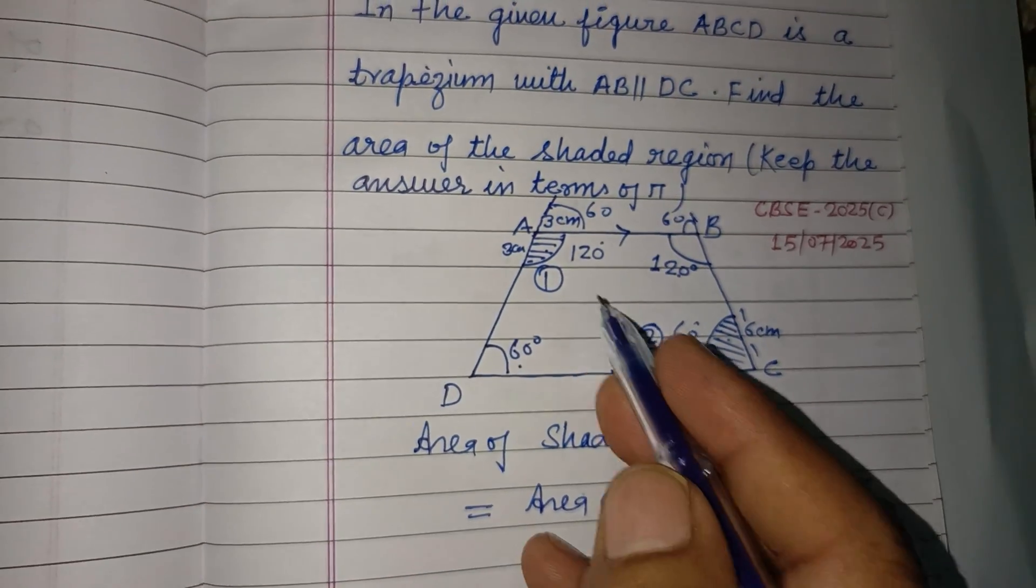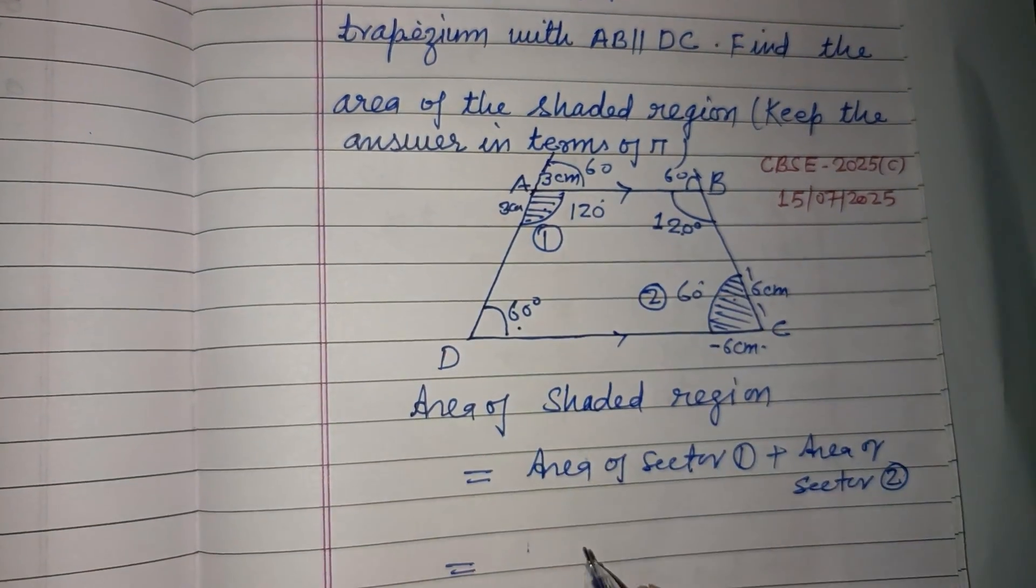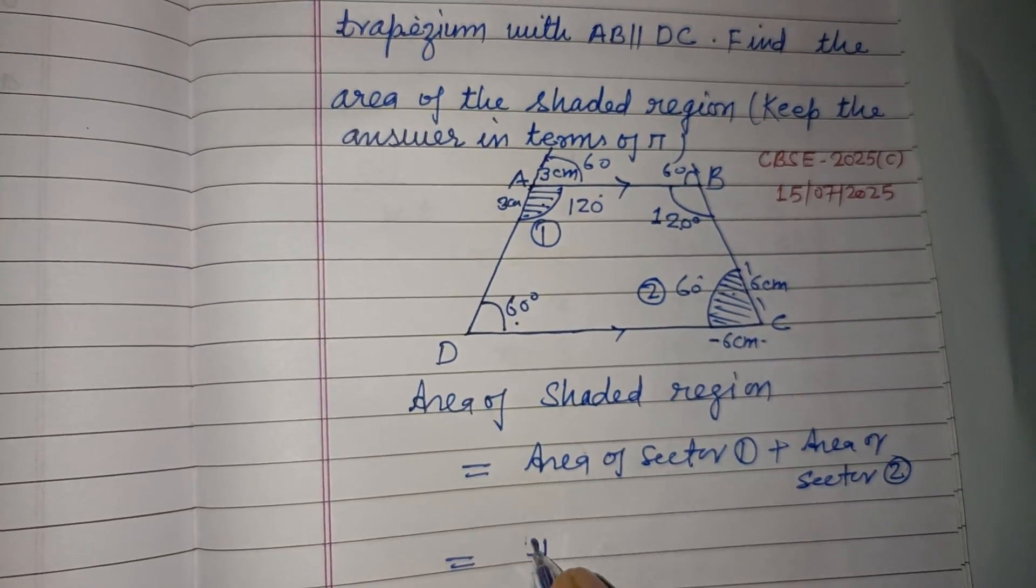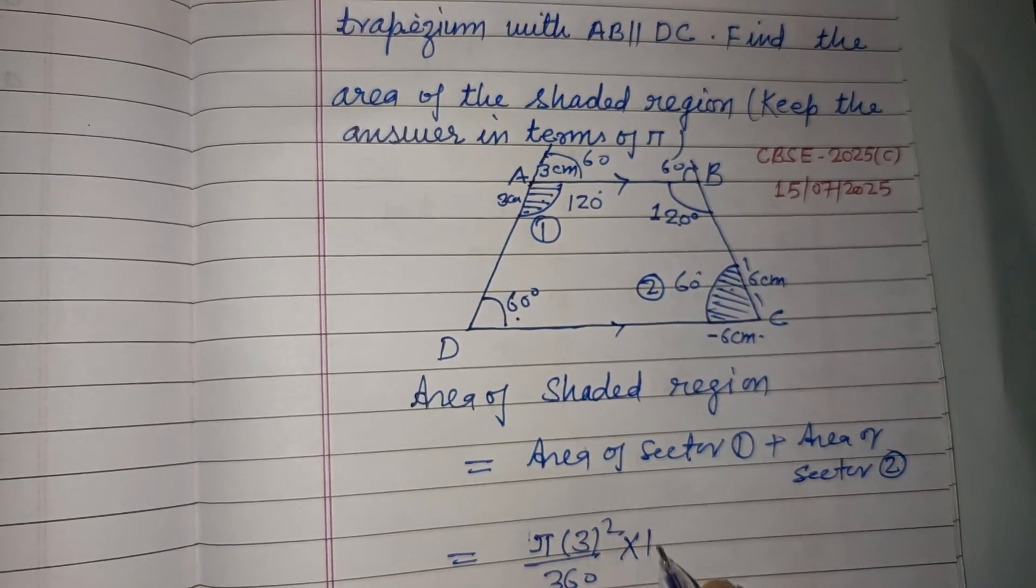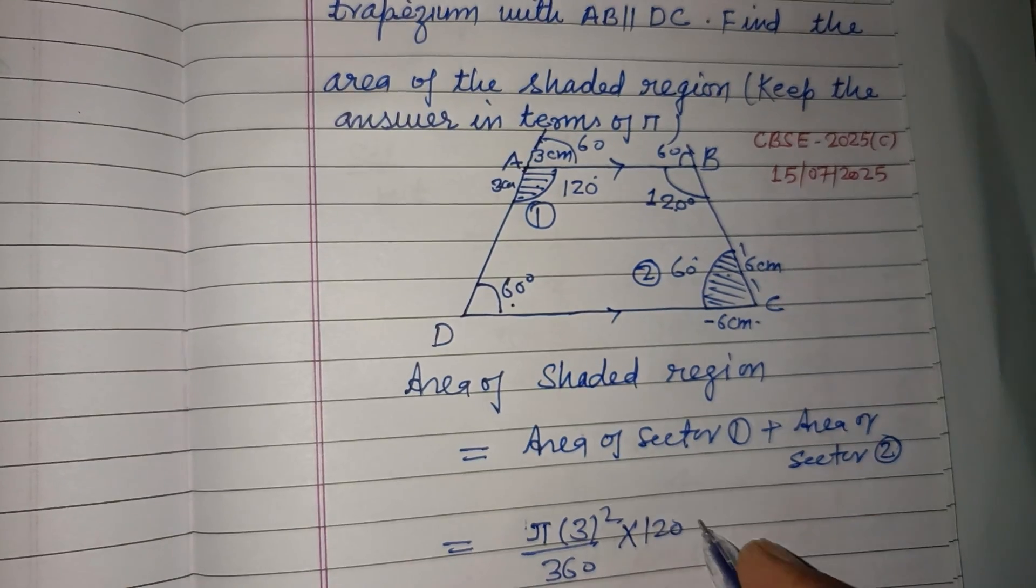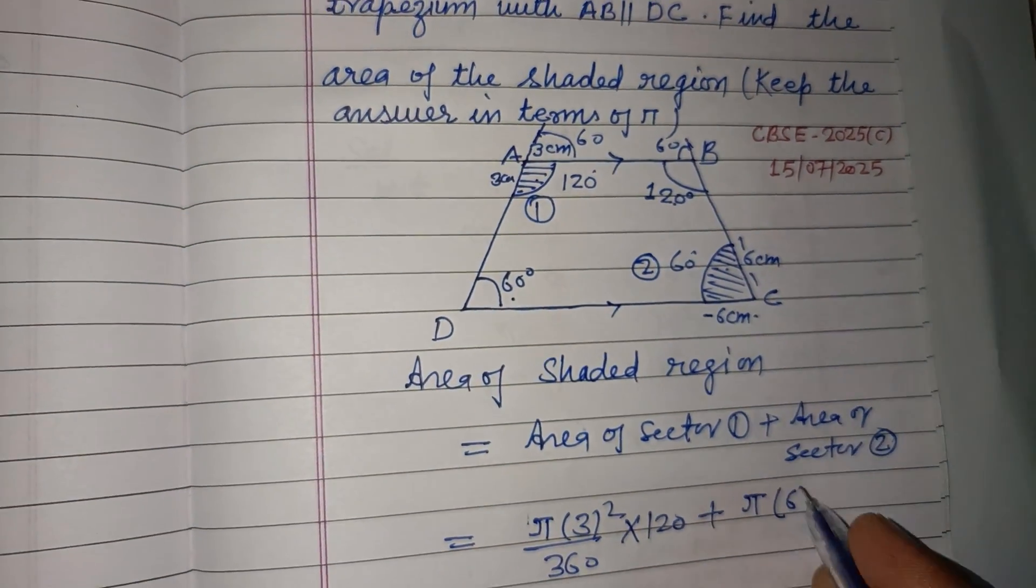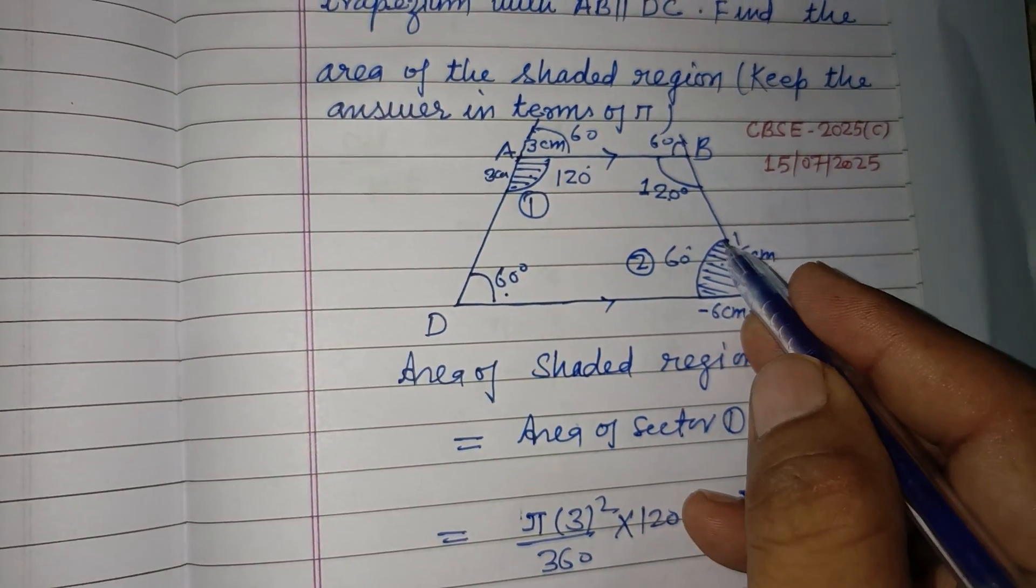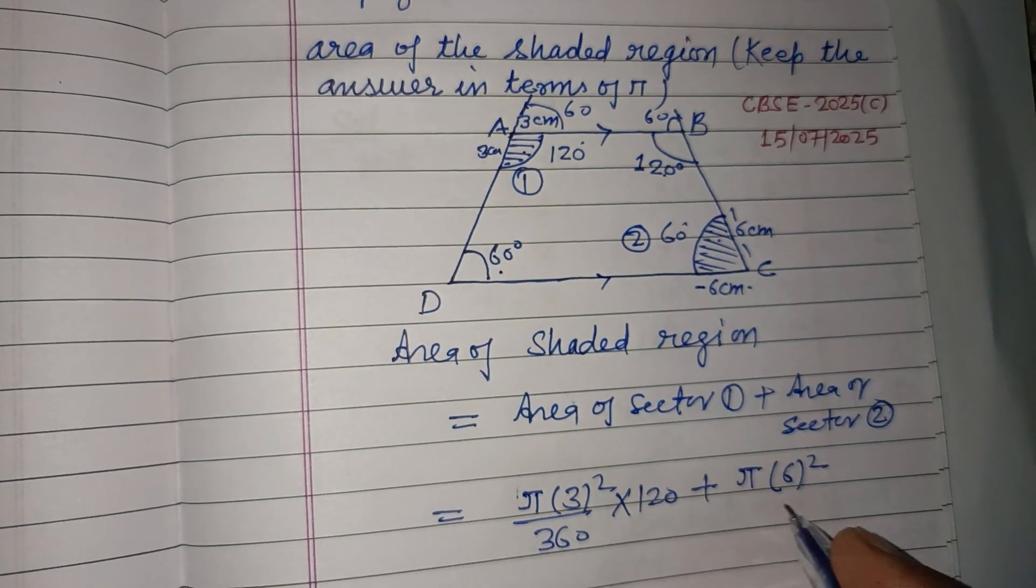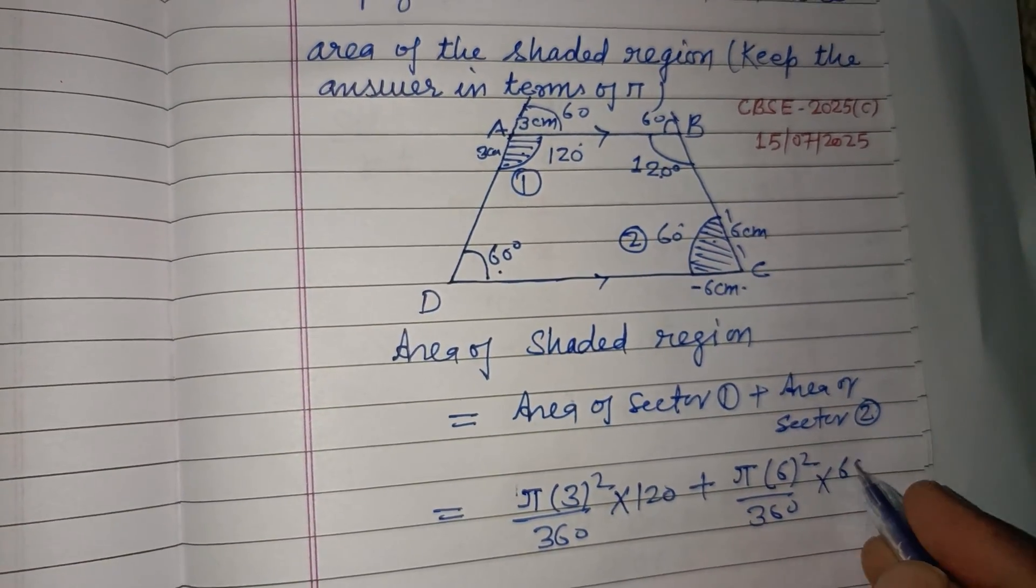This is πr² where r is 3, so π(3²)/360 times 120°, plus πr² where the angle is 60°.